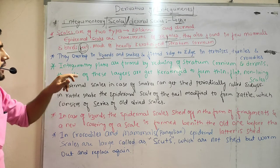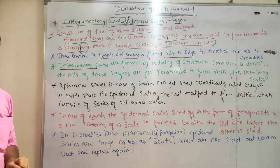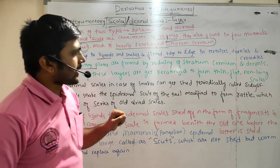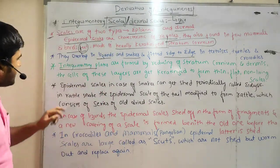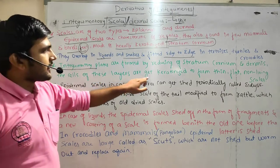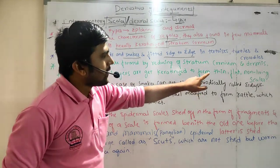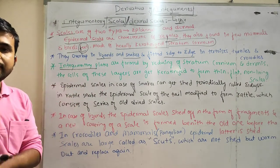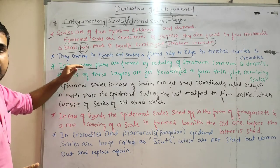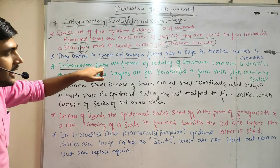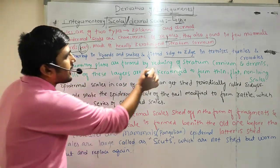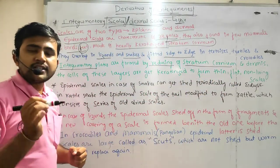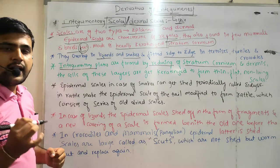The third part is integumentary plates. Integumentary plates are formed by the reduction of stratum corneum and dermis. The cells of these layers are keratinized to form thin, flat, non-living scales. So apart from scales, we are also going to discuss about integumentary plates.